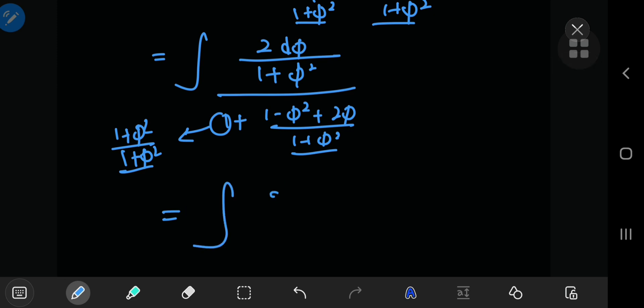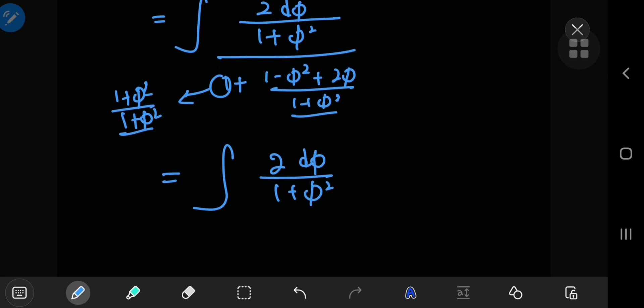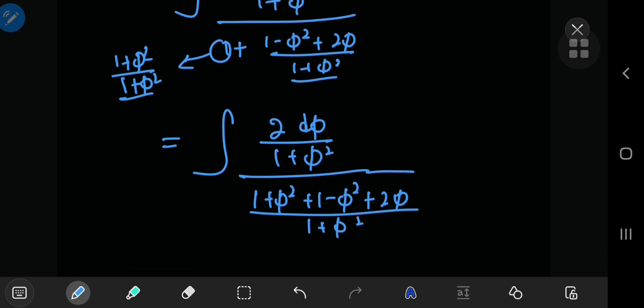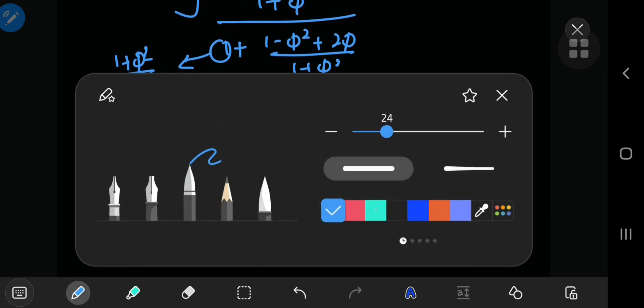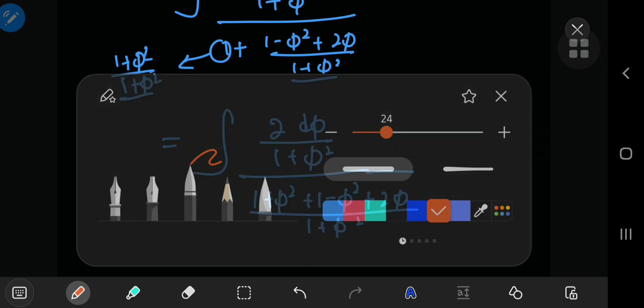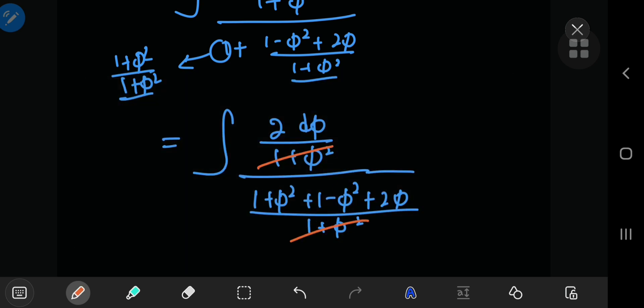You now write this as the integral of 2 d phi by 1 plus phi squared, divided by 1 plus phi squared plus 1 minus phi squared plus 2 phi divided by 1 plus phi squared. That's quite a lot of stuff there, but as you can see everything cancels out pretty nicely.